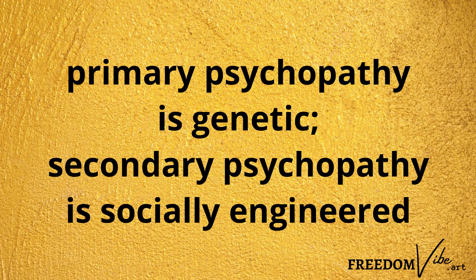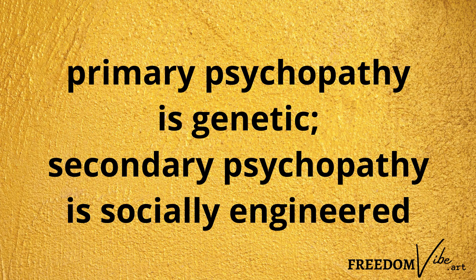Secondary psychopathy is achieved through social engineering and social conditioning. Primary psychopaths who have positions of power will attempt to fashion society in their likeness, creating social constructs through social institutions and norms to encourage people to become secondary psychopaths. There are, of course, many more secondary psychopaths than primary psychopaths. Primary psychopathy comes out through a genetic flaw from birth, whereas secondary psychopathy is a learned behavior.